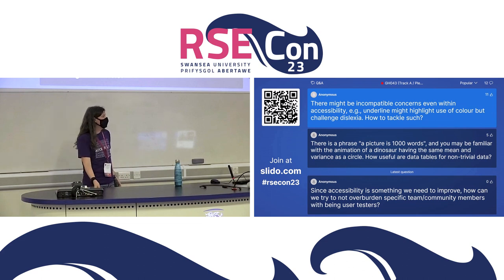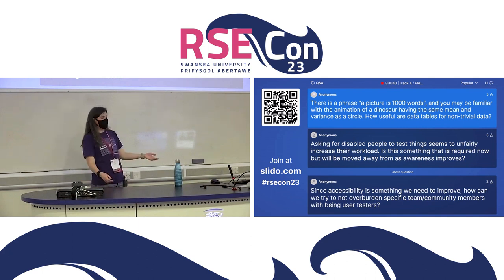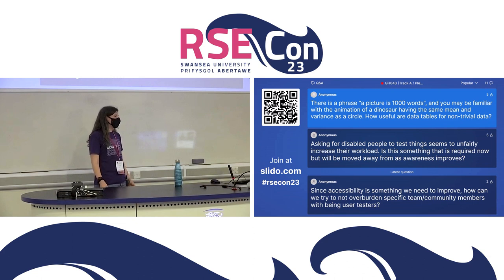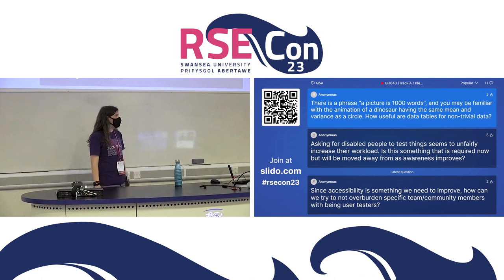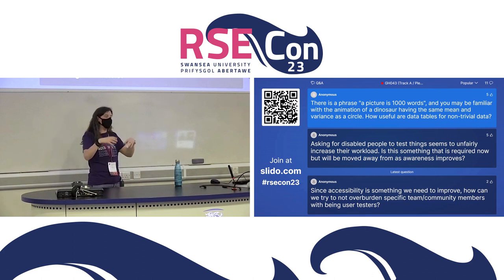Q: There is the phrase 'a picture is worth a thousand words.' You may be familiar with the animation of a dinosaur having the same mean and variance as a circle. How useful are data tables for non-trivial data? A: This is one of those questions where it depends. If you have a data table with a hundred columns and 2,000 rows, that's not going to be easy to navigate. So it's a question of how much data you have, but also some visualizations are just too complex. If you're struggling to think about how to represent this in a non-visual way, maybe there are ways you can reconsider how to simplify the visual data you're showing as well.